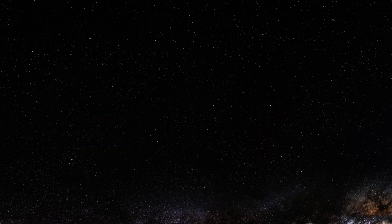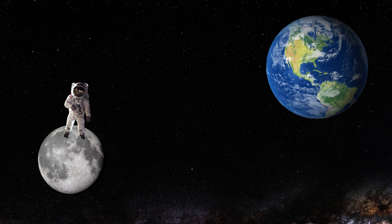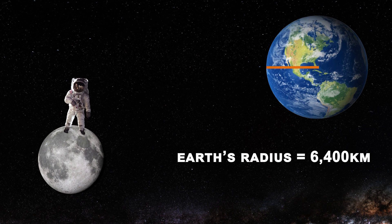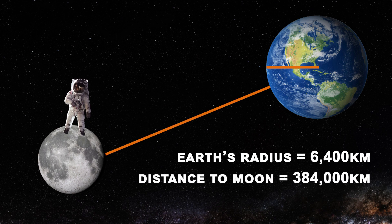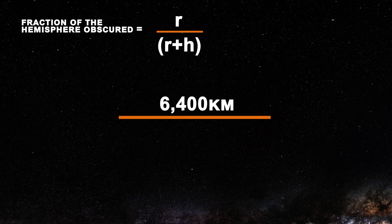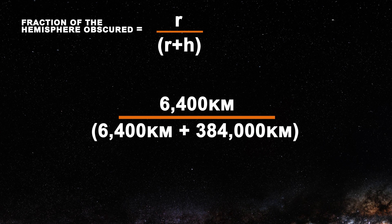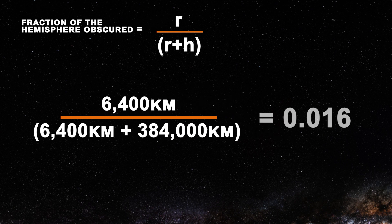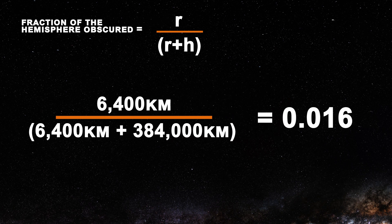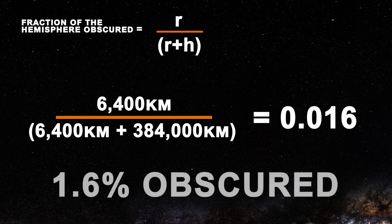So, let's say you're standing on the Moon. Would that be far enough away? Well, the Earth's radius is about 6,400 kilometers and the distance to the Moon is about 384,000 kilometers. We can do the math. 6,400 divided by 6,400 plus 384,000 equals about 0.016, meaning 1.6 percent of the hemisphere would still be obscured.